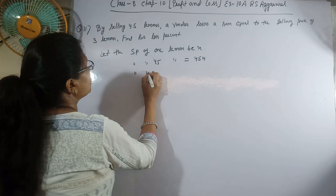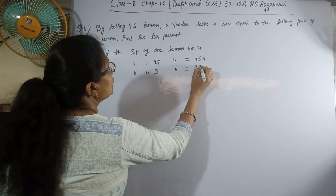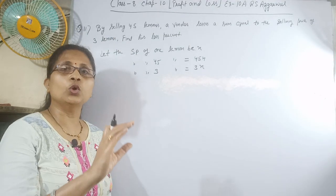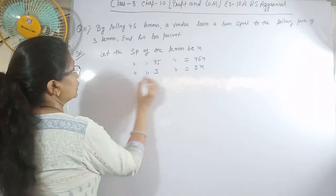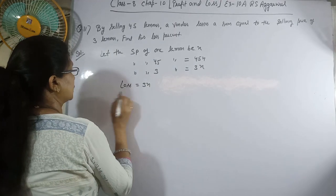Similarly, we need to find the SP of three lemons, because the loss is equal to the selling price of three lemons. Therefore, loss equals 3x.